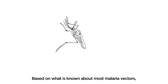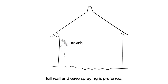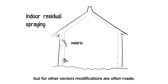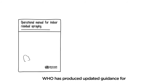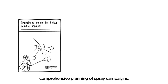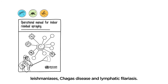Based on what is known about most malaria vectors, full wall and eave spraying is preferred. But for other vectors, modifications are often made. To help countries carry out effective IRS, WHO has produced updated guidance for comprehensive planning of spray campaigns. This covers considerations for malaria, Aedes-borne diseases, leishmaniasis, Chagas disease, and lymphatic filariasis.